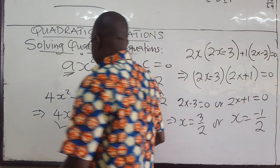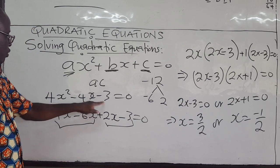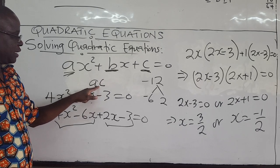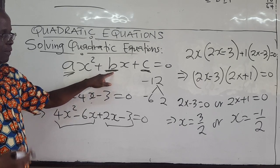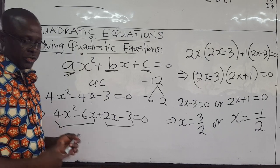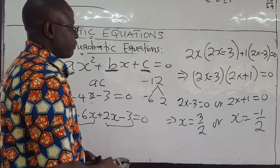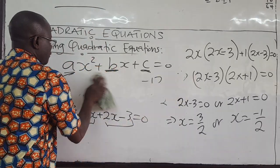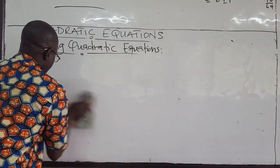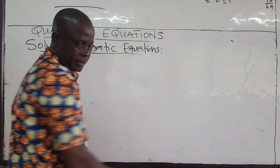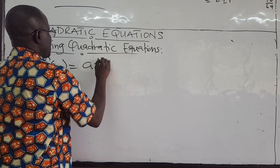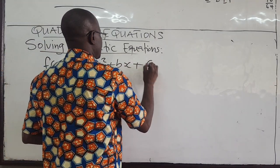If the quadratic equation is factorizable — when you multiply c and a and can find factors that add to give b — it's easier to solve. But there's a more general approach; there's a formula we can develop. From our previous video, we were able to use completing the square to write a quadratic function.